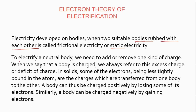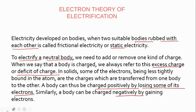In order to electrify a neutral body, the neutral body can have an excess of charge or it can have a deficit of charges. Whenever a body is charged positively, it is by losing some of its electrons, and a body can become charged negatively by gaining some electrons. A body becomes positively charged by losing some of its electrons and negatively charged by gaining some electrons. This is called the electron theory of electrification.